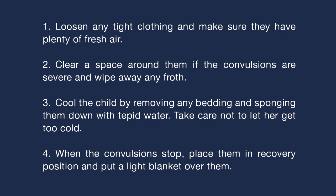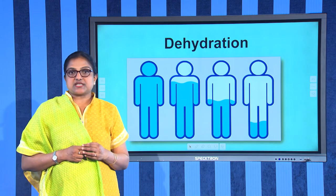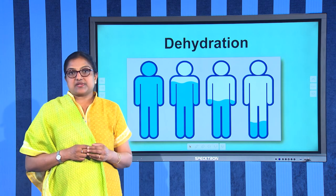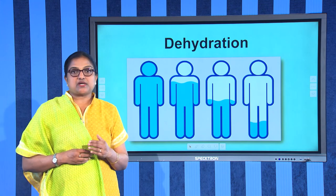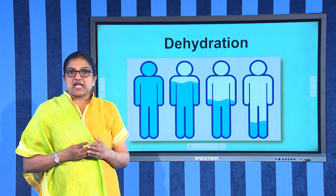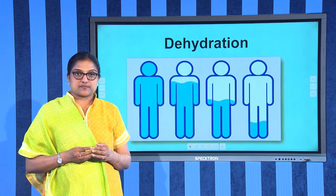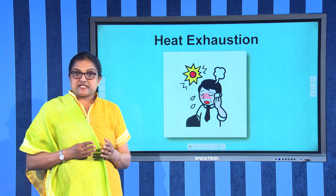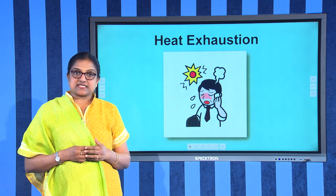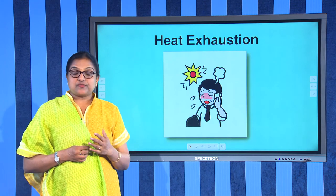Next is dehydration. Dehydration results from an abnormally high loss of salt and water from the body, which can happen due to severe diarrhea or vomiting or heavy sweating. To avoid dehydration, give children plenty to drink and keep them cool in hot weather. Dehydration can lead to heat exhaustion. Symptoms of heat exhaustion include cramp-like pains, headache, feeling exhausted but restless, dizziness, nausea, pale moist skin, and shallow fast breathing.